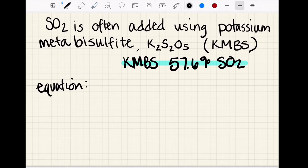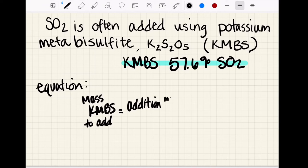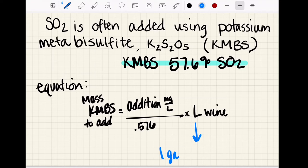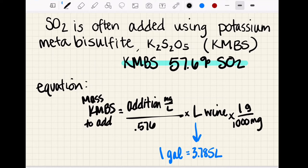Our equation is going to be: the mass of KMBS to add equals the addition we need to make in milligrams per liter, divided by 0.576 (which is our 57.6 percent in decimal form), times the liters of wine. Remember that one gallon equals 3.785 liters, and one gram is equivalent to a thousand milligrams. That will make our final answer of the mass of KMBS we need to add in grams.